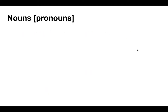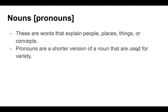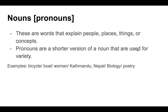Nouns — and I include pronouns here — are words that explain people, places, things, or concepts. Pronouns are a shorter version of a noun, used when restating. If you're describing a person in a paragraph, it would be repetitive to use their name over and over, so you can switch into the pronoun for variety. Examples of nouns include: bicycle, boat, woman, Kathmandu, Nepal — a location and country — biology, a school subject, and poetry.